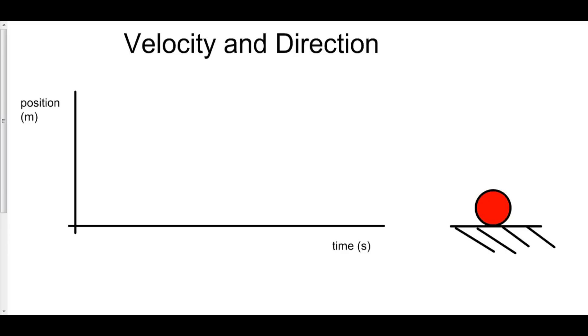Velocity does more than just tell us how fast we're going. It actually tells us in what direction we're going that particular speed. Velocity gives us direction and a magnitude.